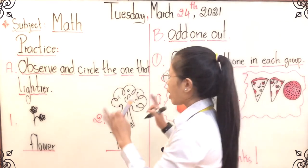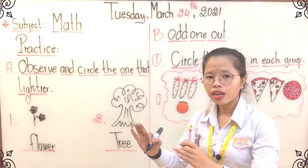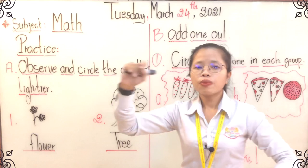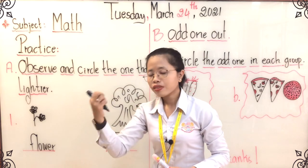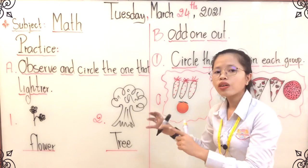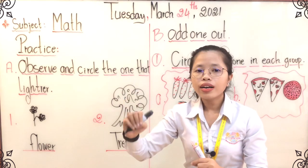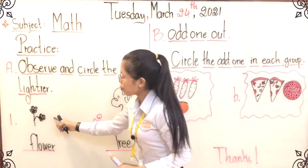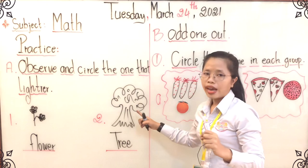So guys, it's time for you to take a look at the features and do the observation together. We have to look at the picture — one is flower, compare together, and then consider. Between the two features on the whiteboard, which one is lighter? So after we observe, the one that is lighter is our first feature — the word is flower.